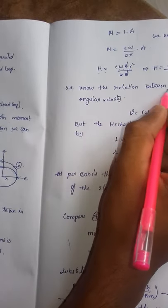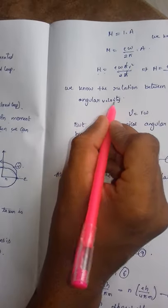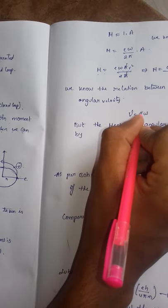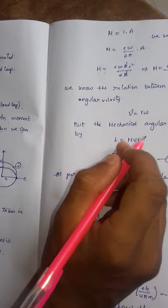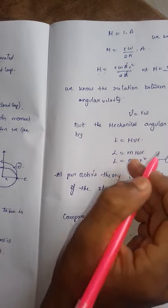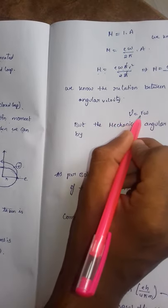We know that the relation between linear velocity and angular velocity is V equals to r times omega, where the mechanical angular momentum L is given by L equals to M v r. We know that V equals to r omega.